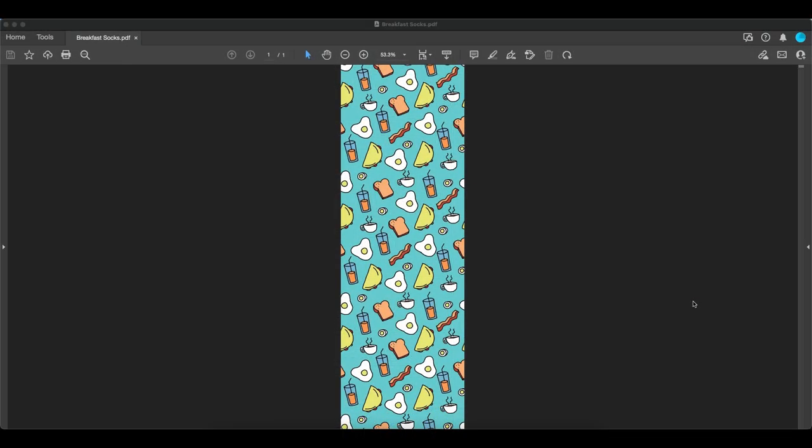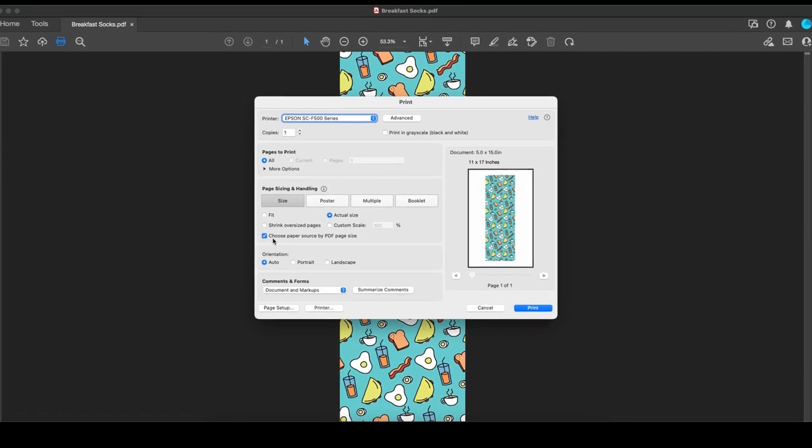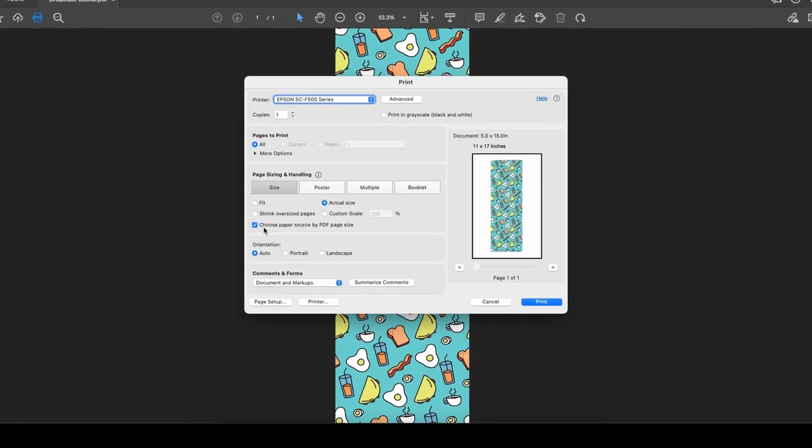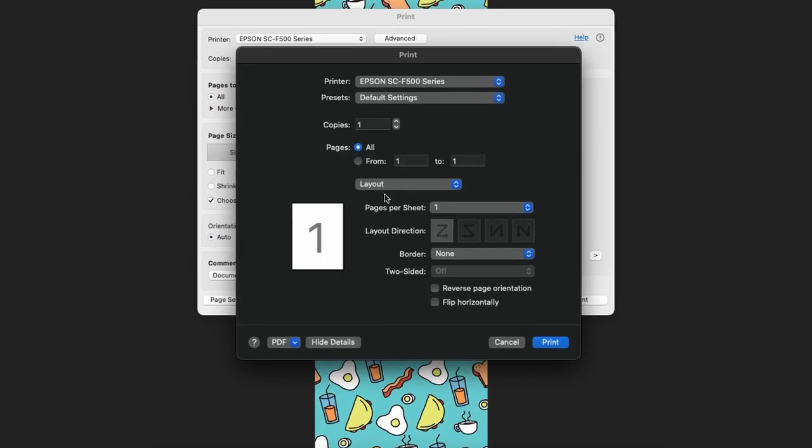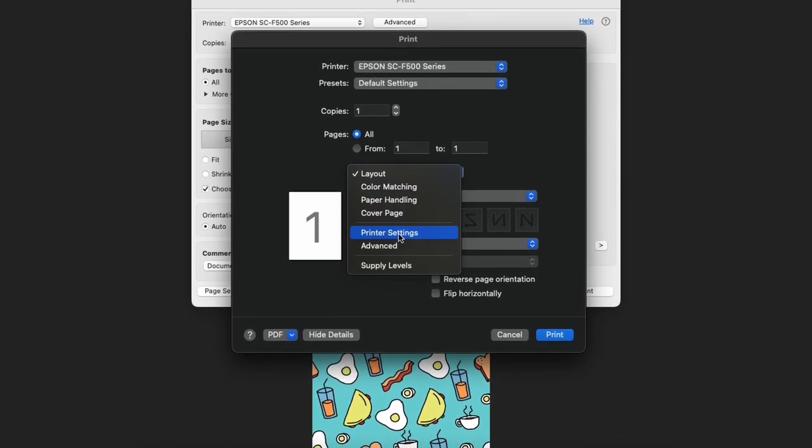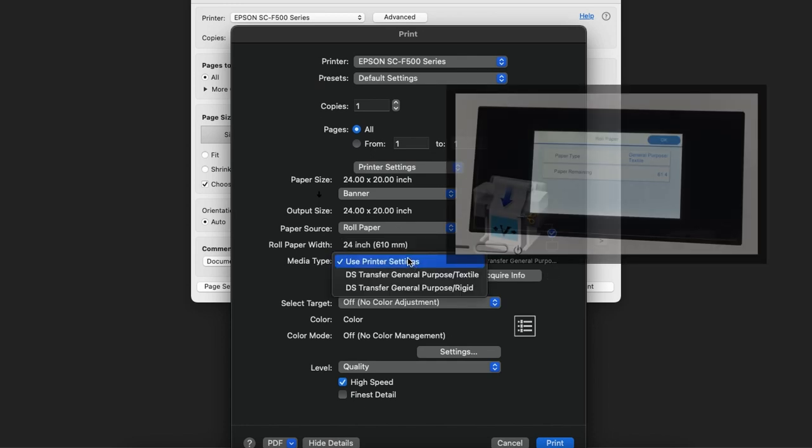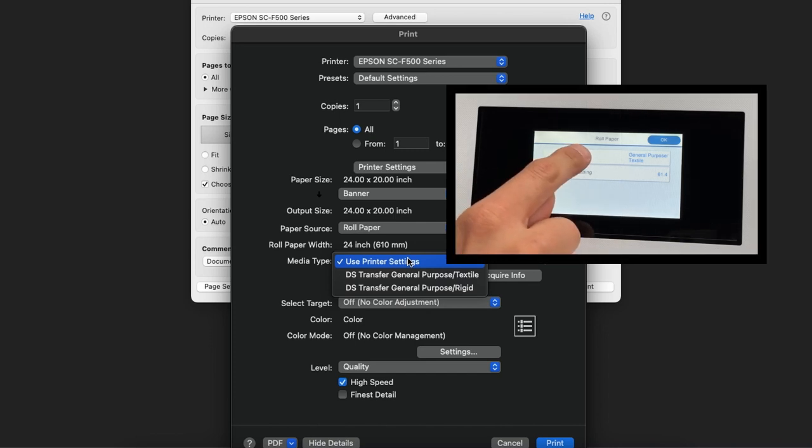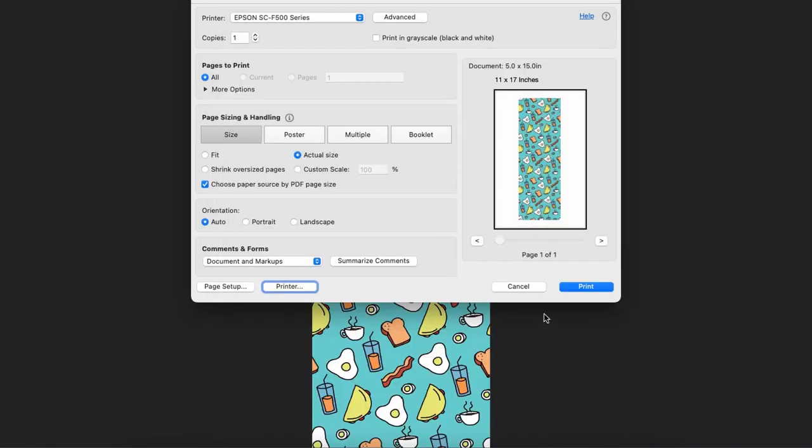For Mac users, click the print button. Check choose paper source by PDF page size if it is not already checked. Select, click printer. Choose printer settings. Select the media type setting that matches the paper you loaded. If you want to use paper settings that have been set in the printer's control panel, select use printer settings. Click print, and click print again to send the file to the printer.